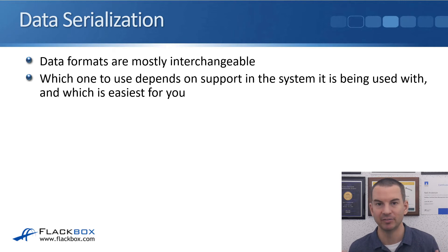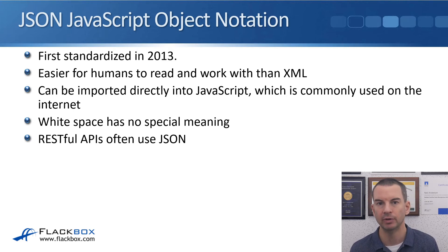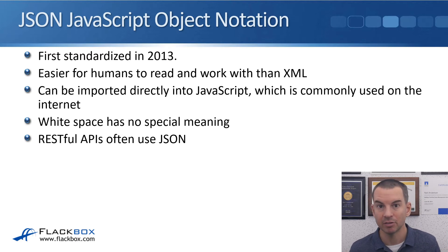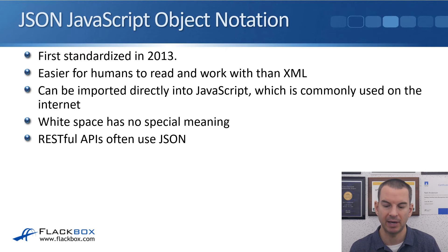Starting off with JSON, because this is the one you're most likely to be tested on in the CCNA exam — one of the requirements is that you're able to read JSON formatting. JSON stands for JavaScript Object Notation, first standardized in 2013. It's easier for humans to read and work with than XML. JSON can be imported directly into JavaScript, white space has no special meaning, and RESTful APIs often use JSON.